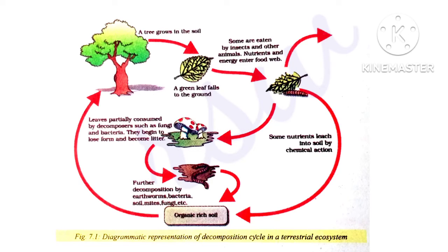This is a diagrammatic representation of the decomposition cycle in a terrestrial ecosystem. A tree grows in the soil. A green leaf falls to the ground. Some are eaten by insects and other animals.